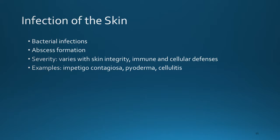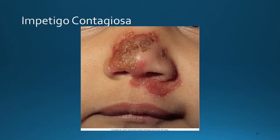Bacterial infections of the skin can develop into abscess formation. The severity varies with the skin integrity and the immune and cellular defenses present. Examples include Impetigo Contagiosa, Pyoderma, and Cellulitis. Impetigo Contagiosa is caused by Staphylococcus. It begins as a reddish macule and becomes vesicular, tends to spread peripherally, and the exudate dries to form a heavy honey-colored crust. Topical application of bactericidal agents is effective. In severe or extensive cases, systemic oral or parenteral antibiotics are appropriate.